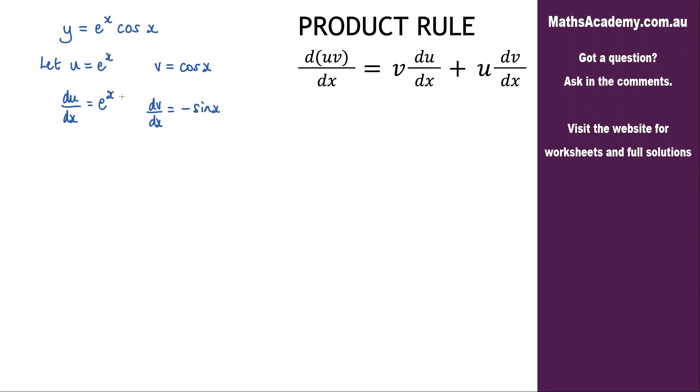Now we can apply the product rule. So dy by dx is going to be equal to v multiplied by du dx, and that would give me e to the x cosine of x, and then...